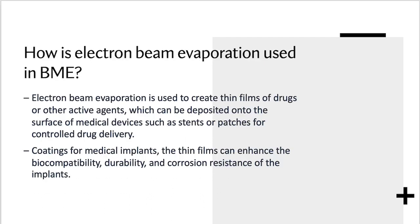How is electron beam evaporation used in medicine and BME? Electron beam evaporation basically creates a thin film of drugs and other active agents, which are deposited onto the surface of medical devices such as stents. They are also used for coatings for medical implants.